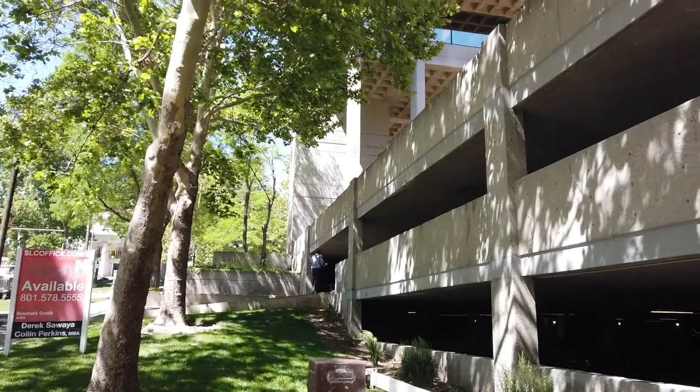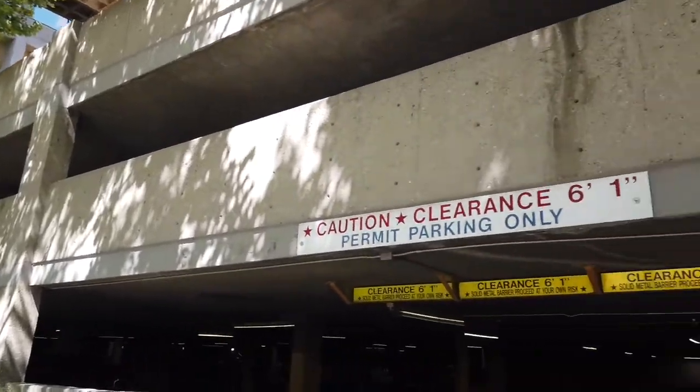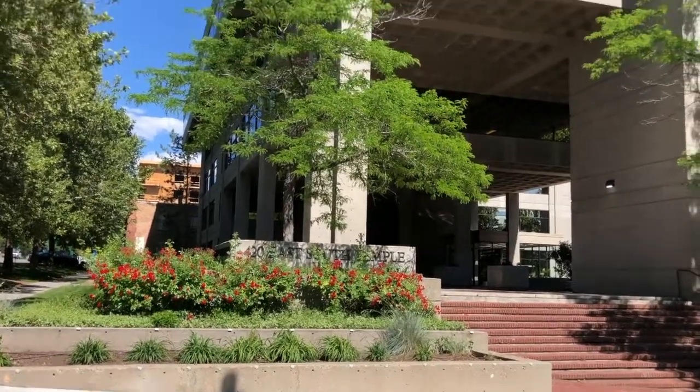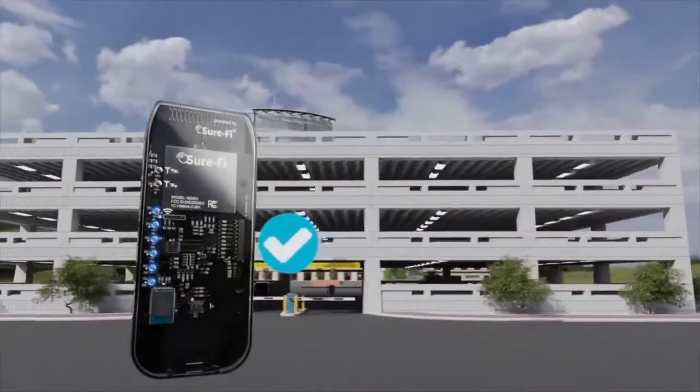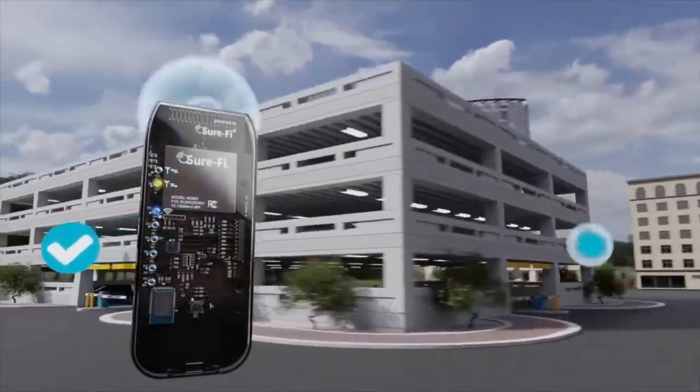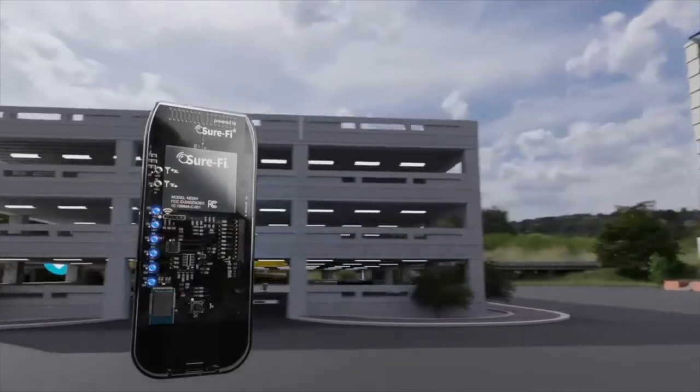In this video we see how to add access control to the parking garage of this beautiful building located in Salt Lake City. Use your range evaluation kit to test your signal strength at each of the entrances.